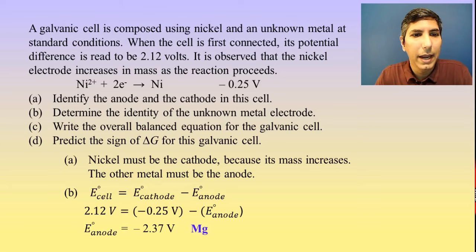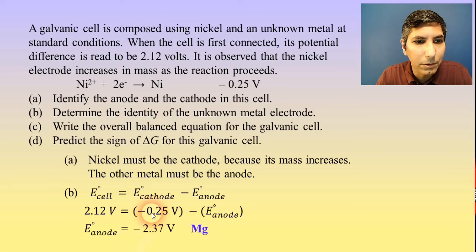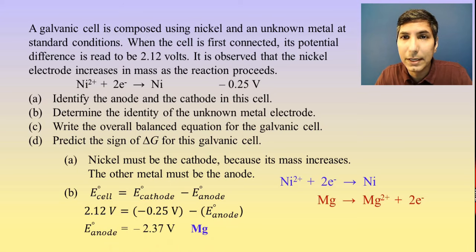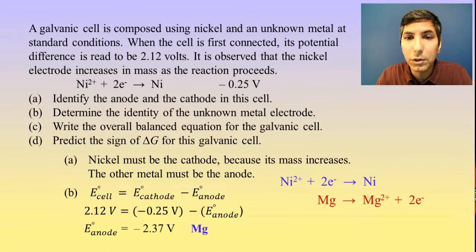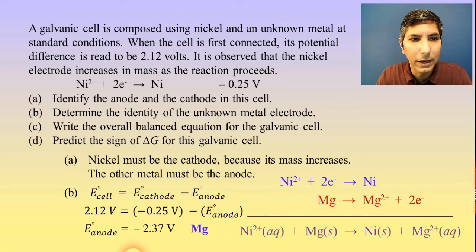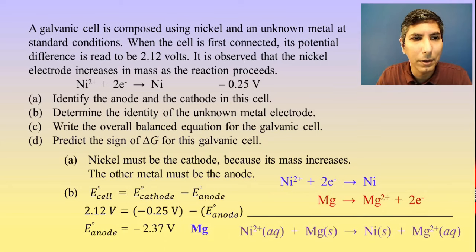So the anode is magnesium. For the overall balanced equation, the cathode half reaction is written as given. Magnesium is the anode — it is being oxidized — so magnesium yields magnesium 2+ ions plus two electrons. When we add these together, the two electrons disappear, and our overall balanced equation is: nickel 2+ aqueous plus magnesium solid yields nickel solid plus magnesium 2+ aqueous.